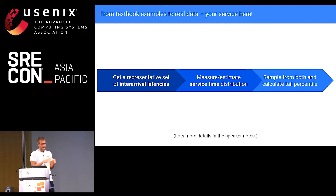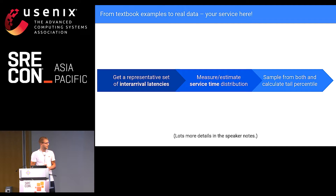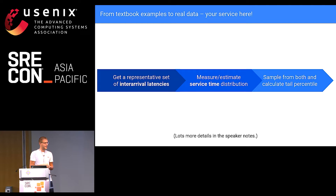Then you just sample from both of those distributions, run them through a simulator, and generate these graphs. In the speaker notes I've linked to the equivalent of a Jupyter notebook with Python code to generate these graphs, so it should be fairly easy to replicate.